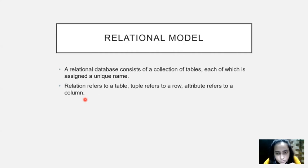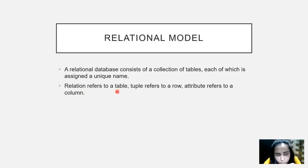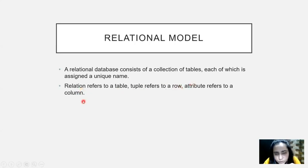This is why we need to make sure that the name we provide is unique. It's basically a table with rows and columns, but we refer to these with different names. A table is known as a relation, a row is known as a tuple, and a column is known as an attribute.